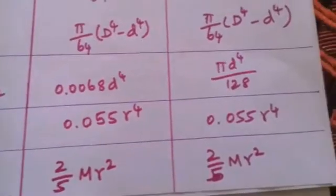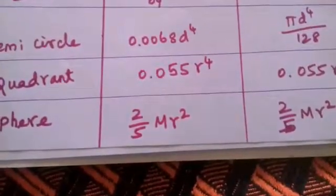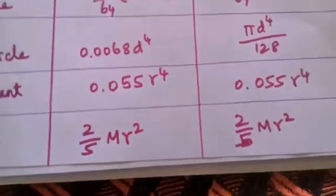Quadrant: 0.055 r4. Iyy also same. It is very important, here question.